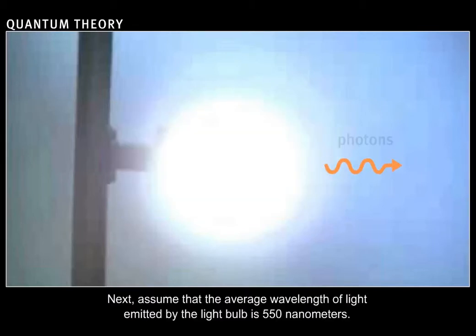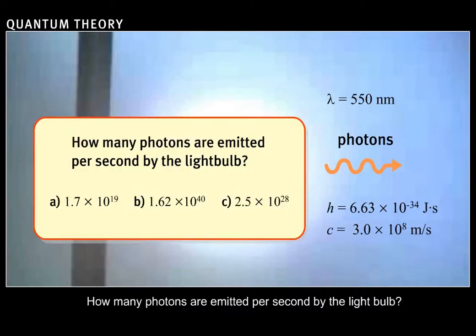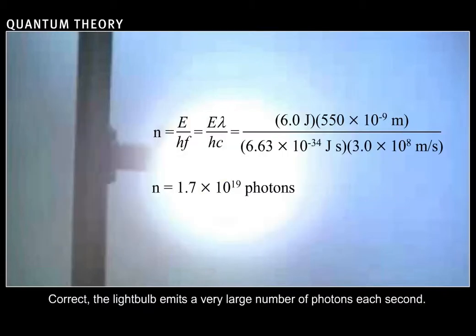Next, assume that the average wavelength of light emitted by the light bulb is 550 nanometers. How many photons are emitted per second by the light bulb? Correct. The light bulb emits a very large number of photons each second.